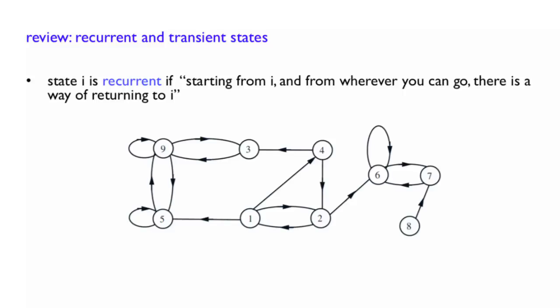So if you have a Markov chain of this form and you start in state 9, the options for you are to either go to state 3 or to state 5. But no matter what, if you go to 3, you can come back always. And if you go to 5, you can always come back as well. So clearly 9 here will be a recurrent state, and 3 for the same reason, and 5 as well.